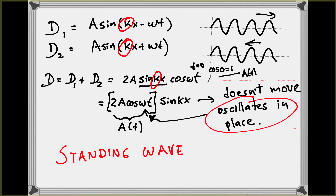Notice that the standing wave has the same wavelength as the parent waves. The daughter wave — the combination of the two parents — has the same k, and therefore the same wavelength, because we started with the assumption that both parent waves share the same wavelength.